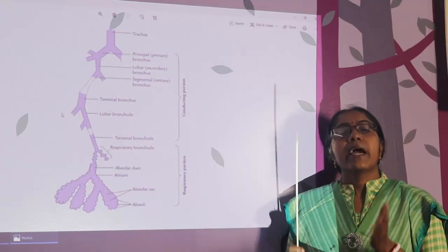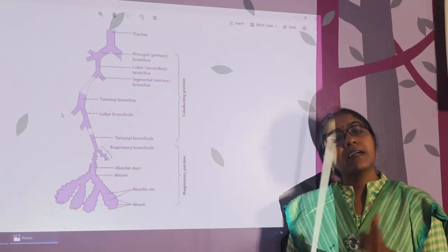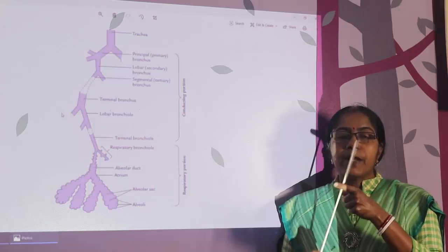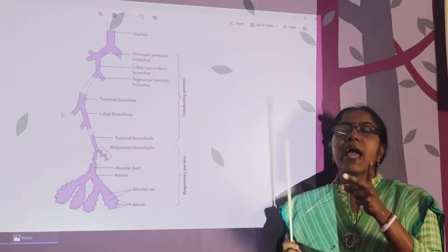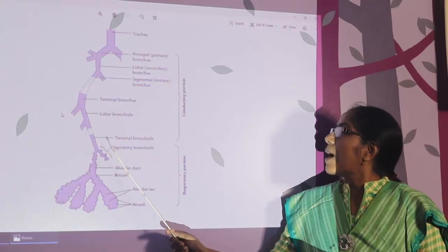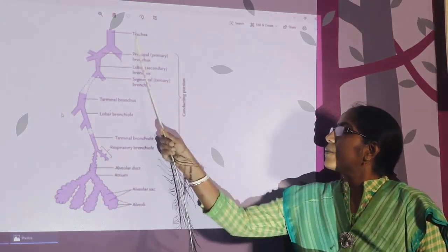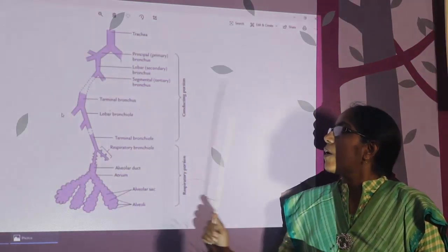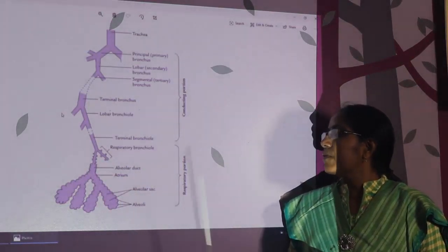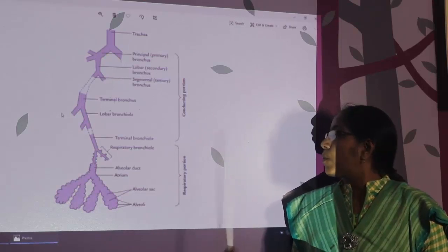The lung is composed of two functional components: the conducting portion and the respiratory portion. The conducting portion extends up to the terminal bronchiole. From the respiratory bronchiole to the alveoli, it is the respiratory portion.